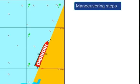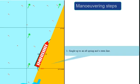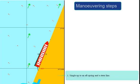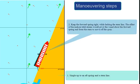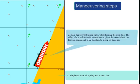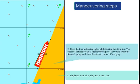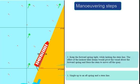This manoeuvring can be divided into 4 basic steps. Step 1: Single up to forward spring and a stern line. Step 2: Keep the forward spring tight while slacking the stern line. The effect of the inshore tidal stream would pivot the vessel about the forward spring and force the stern to move off the quay.